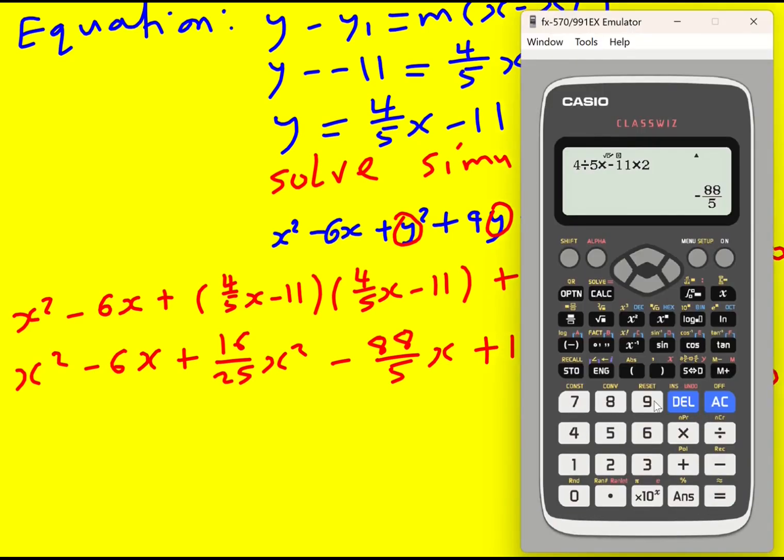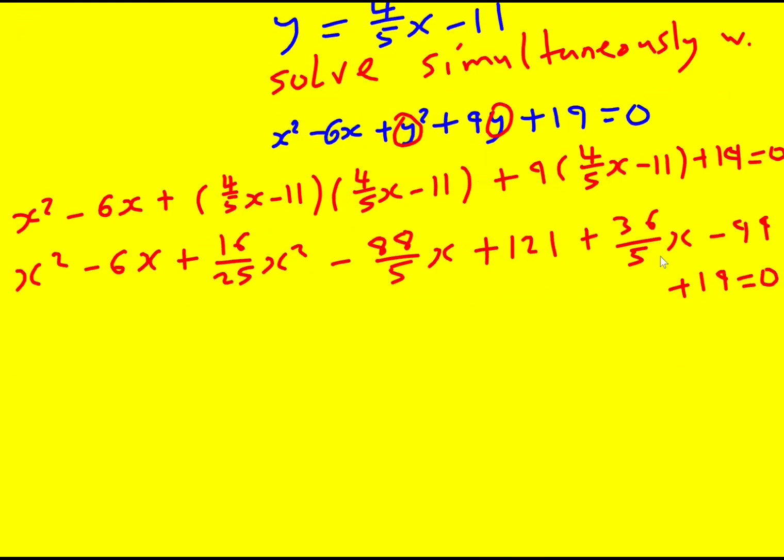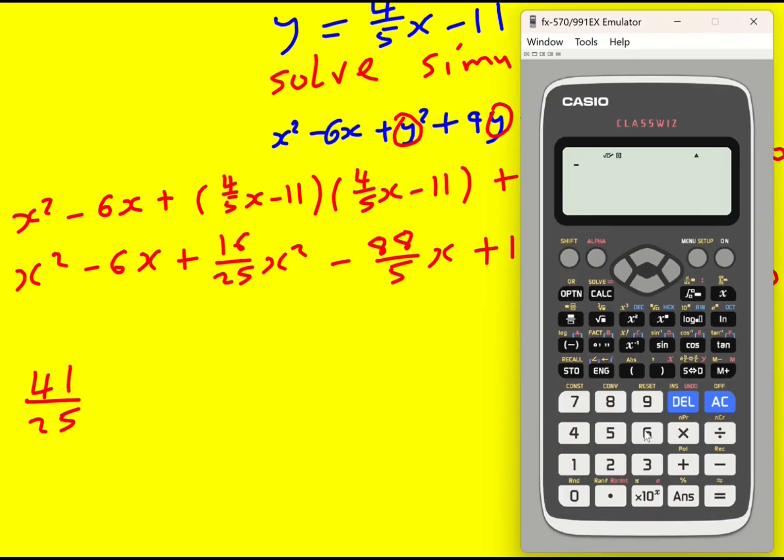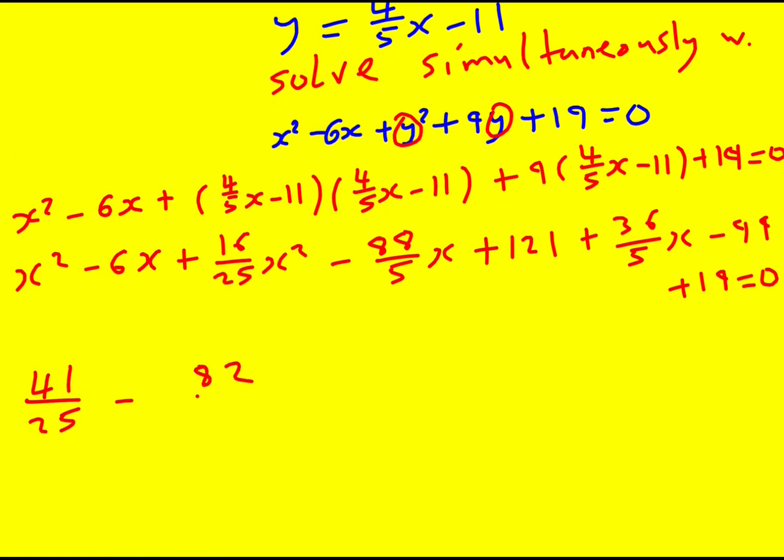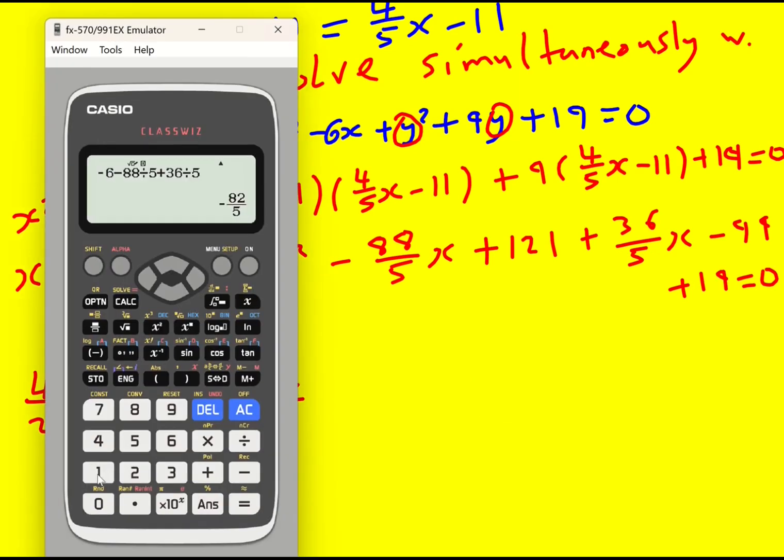So minus 88 over 5x plus 121 plus 36 over 5x minus 99 plus 19 equals 0. Now I'm going to show you two ways to do the next bit. Probably, especially if you're preparing in an exam situation, you would just use your calculator as much as possible. So I'm going to add the two coefficients for x squared, which gives 41 over 25, and do the same for the other ones. So minus 82 over 5. And then 121 minus 99 plus 19, which is 41.